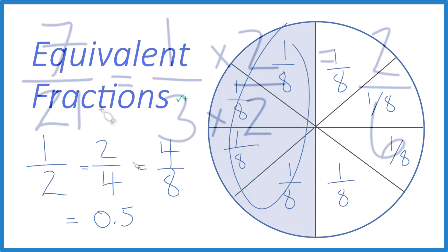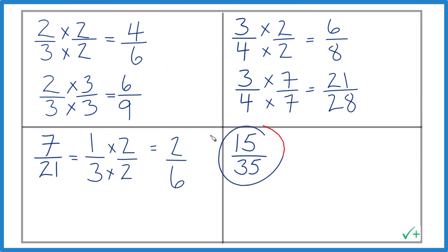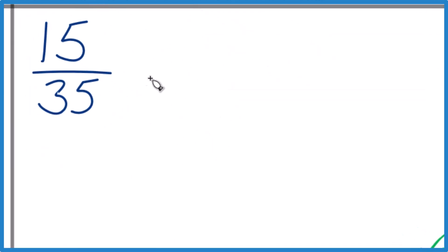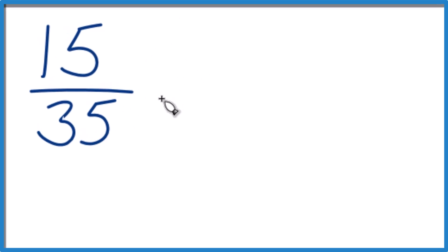Let's do some more practice. All right, you try this last one here. Pause. Give it a shot. Here's how I did it. I know that five goes into each of these numbers. So 15 divided by five is three. Three times five is 15. 35 divided by five, that's seven. Seven times five is 35. That's an equivalent fraction.